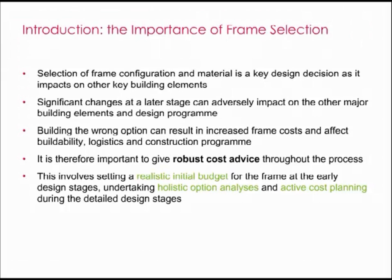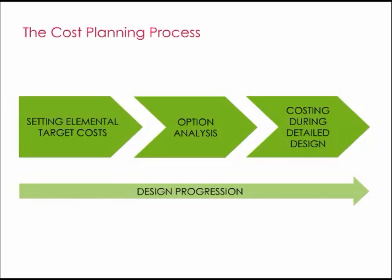There are a number of key stages to the cost planning of a frame which complement the development of design through the recognized design stages. During feasibility and initial design stages, when the budget for the building is established, it is important to set a realistic budget for all individual elements of the building, including the frame. Initial cost modeling will focus on setting elemental cost targets, developing into an option analysis comparing various frame solutions, typically undertaken during concept design and more detailed cost planning through the developing design stages. This iterative process is set out on the following slides.